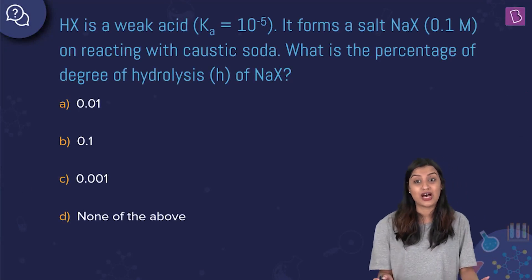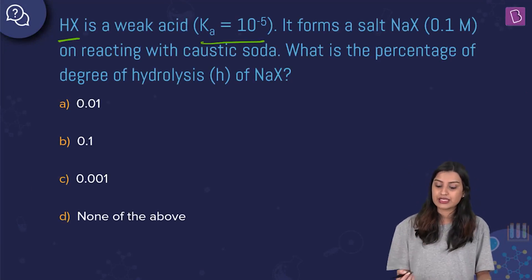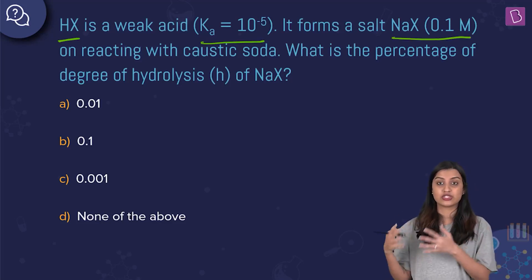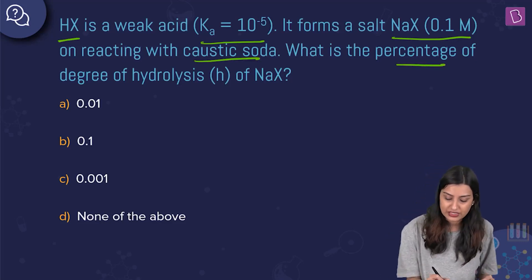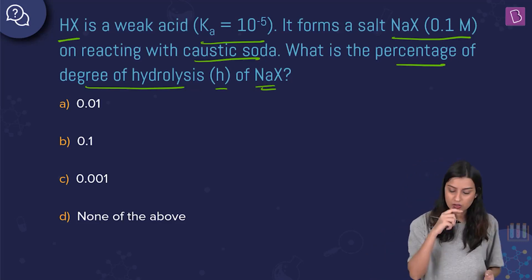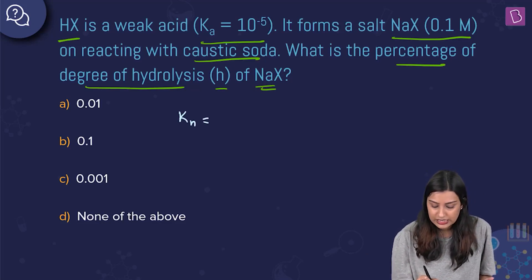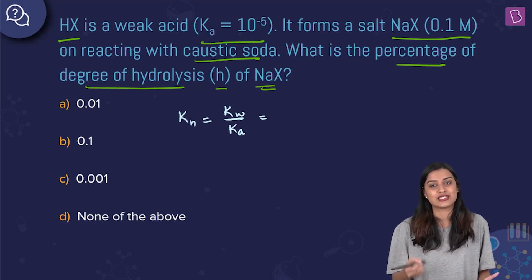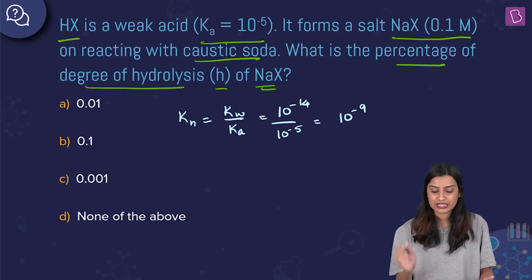The next question is from ionic equilibrium. HX is a weak acid with Ka = 10⁻⁵, and it reacts with NaOH (caustic soda) to form the salt NaX at a concentration of 0.1 M. We need to find the percentage degree of hydrolysis. First, calculate Kh: Kh = Kw / Ka = 10⁻¹⁴ / 10⁻⁵ = 10⁻⁹.